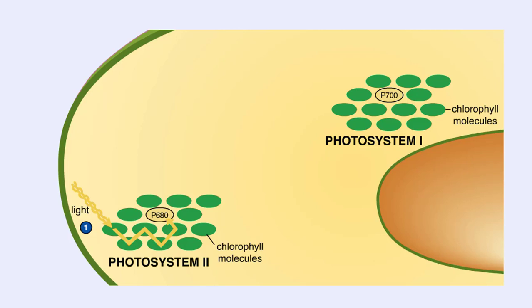Finally, the transferred energy excites a reaction center molecule of chlorophyll A called P680, and electrons are boosted from P680 to a higher energy level. But instead of returning to their more stable ground state, these electrons are captured by an electron acceptor molecule.